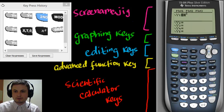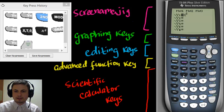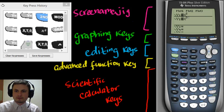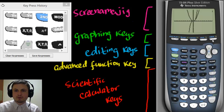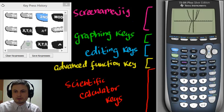If you want two functions, go back to the Y= screen, go down, and enter another one. Let's enter x cubed. Now we have two functions — press Graph and you'll see both: x squared and x cubed plotted together. That's how you plot multiple things.